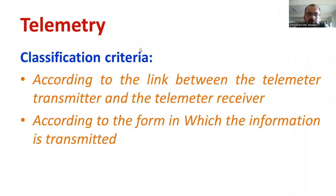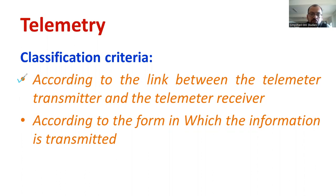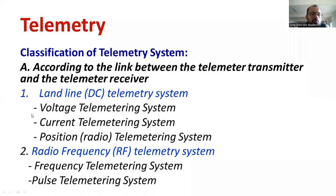The classification of telemetry systems is done using the following parameters. Number one: according to the link between the telemetry transmitter and telemetry receiver. The ultimate purpose of telemetry is to transmit measurement data from one point to another. We must have one receiver side and one transmitter side. Based on whether the link is wired or wireless, you can classify the telemetry system. Another parameter is according to the form in which the information is to be transmitted.